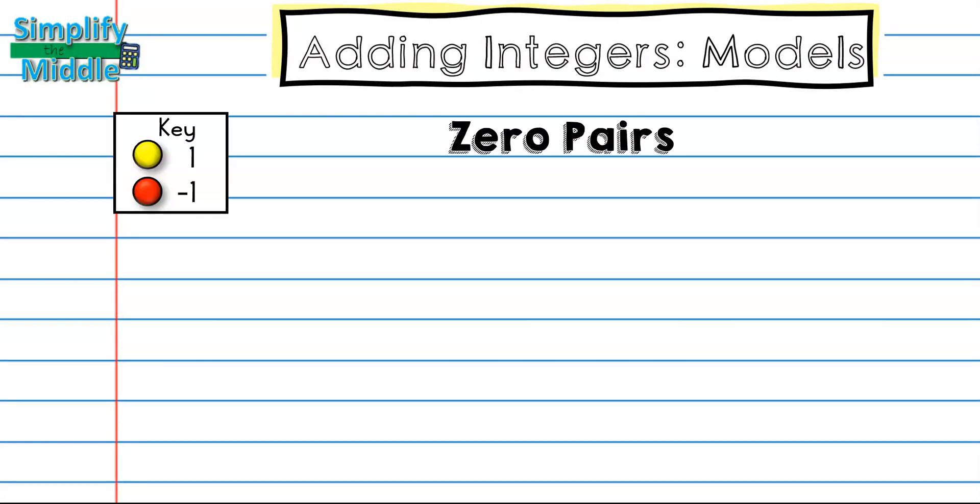We talked about zero pairs when we were discussing opposites and here we have a key of some counter chips that we are going to be using today to represent our adding integer problems. So whenever I see yellow I know that that's going to be positive one and red is going to be negative one.